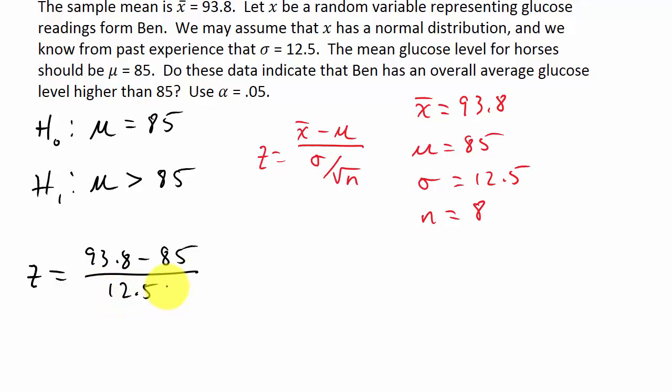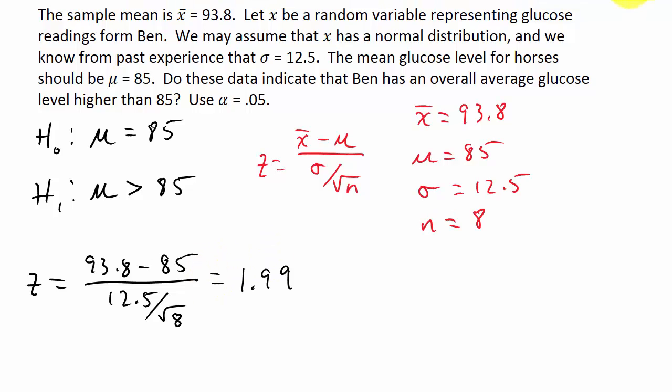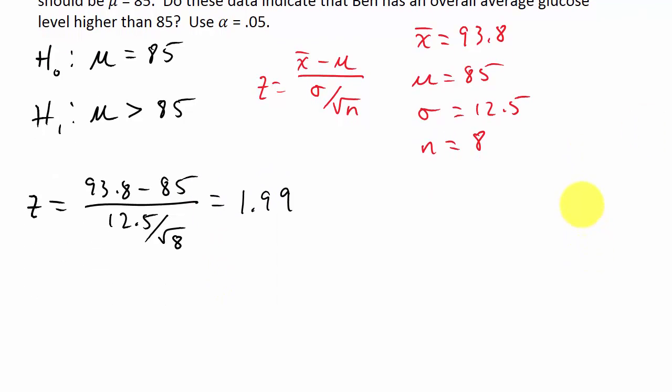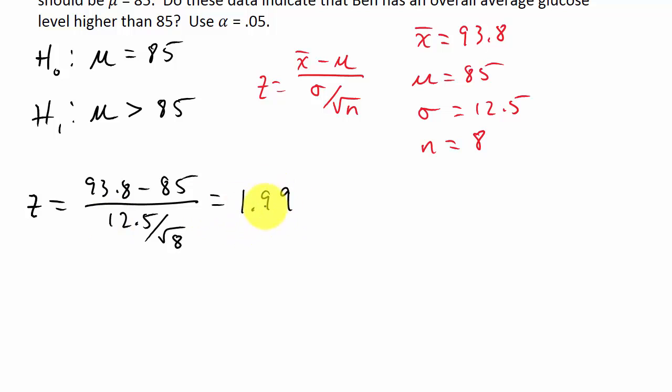So z is equal to x bar minus mu over sigma divided by the square root of n. Here's our z value: 1.99, rounded to two decimal places. And we're looking for the area to the right of that.